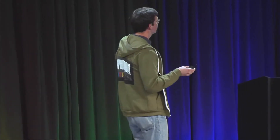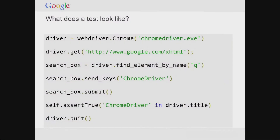Here's a sample test written in Python using the open source Python WebDriver library. The first statement creates an instance of ChromeDriver, passing in the path to the ChromeDriver binary. The second navigates to our test page — Google. Then we find an element with the name 'q', save a reference as 'search_box', send keys to type 'ChromeDriver', and submit the form. WebDriver waits for any navigation to complete, then we assert that 'ChromeDriver' is in the page title. Finally, we quit.